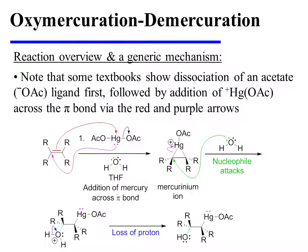It's worth noting that some textbooks will show the dissociation of an acetate ligand first, followed by the addition of this positive mercury species across the pi bond via both the red and the purple arrows. This makes no difference in the final oxymercuration product that is observed; it's just a slight variation in the way the mechanism may be drawn.